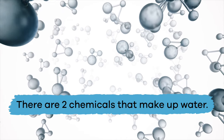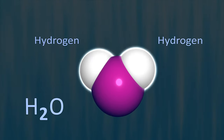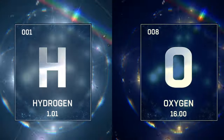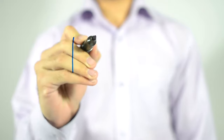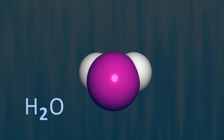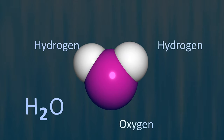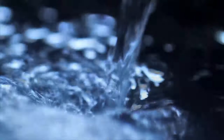There are two chemicals that make up water. Oddly enough, both chemicals are actually gases, but when they are joined together in a special way, they create water. These two chemicals are called hydrogen and oxygen, which is why water is sometimes referred to as H2O — because it takes two hydrogen atoms and one oxygen atom to form a water molecule. A water molecule is the same whether it's a liquid, a solid, or a gas.